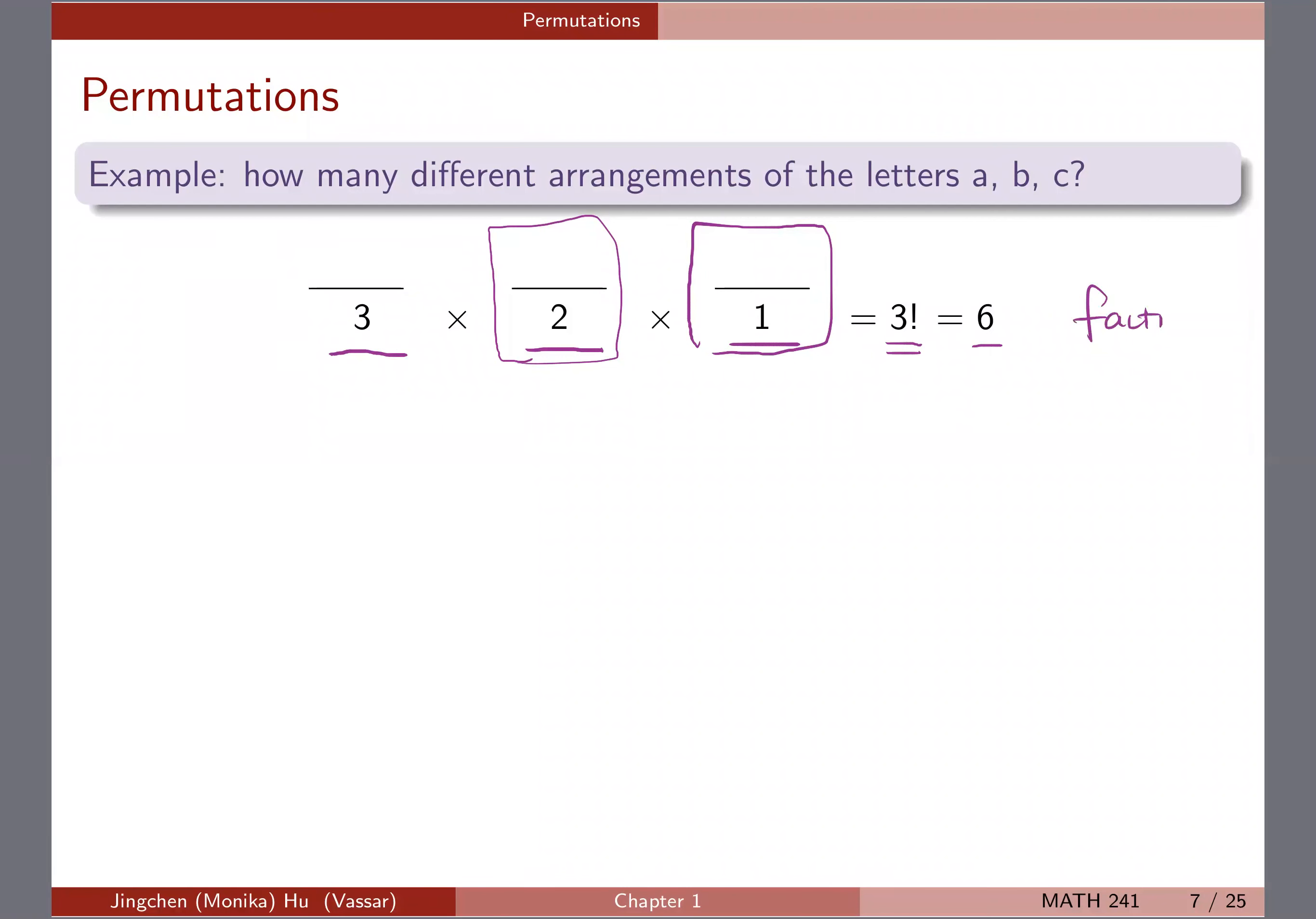So for three factorial, it's three times two times one. For any integer number, the number factorial will be the number times the number minus one times number minus two until one. So as another example, five factorial will be five times four times three times two times one.